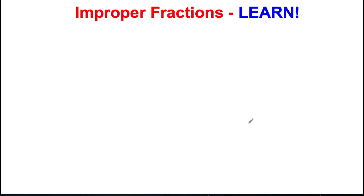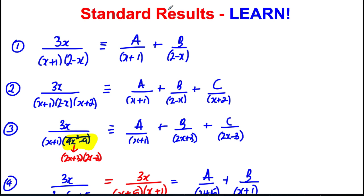Next, we need to learn about how improper fractions come up. Now, in all the cases before, the order, the highest power of x on the top, the numerator, was less than the order of the bottom, which was the highest power of x on the denominator.